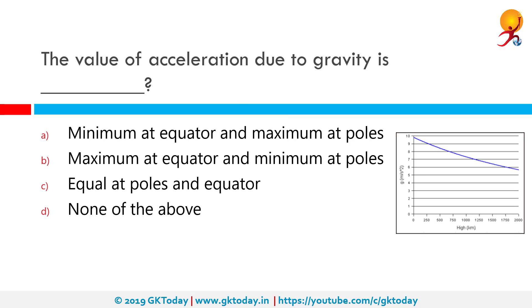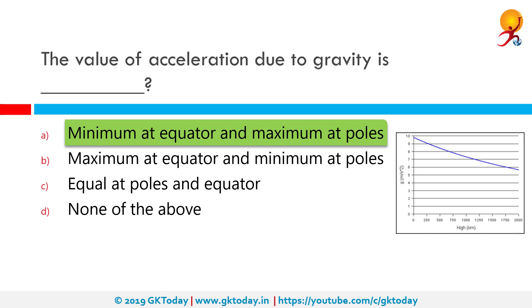The value of acceleration due to gravity is the acceleration gained by an object because of the gravitational force, and it changes with the height of the object from the earth's core. So it is minimum at the equator and maximum at the poles.